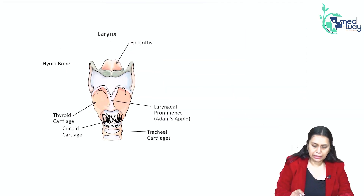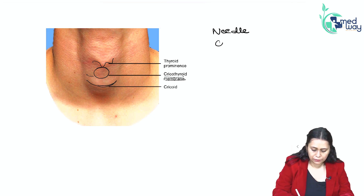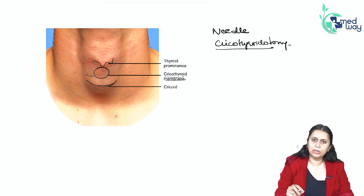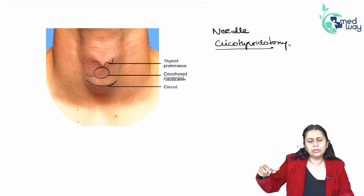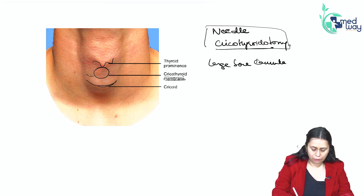For needle cricothyroidotomy, we take a needle — a thick bore needle — and we pierce the cricothyroid membrane. We attach it with a 2cc syringe and a connector and do the ventilation. This uses a large bore cannula, like a 14 gauge or 16 gauge.